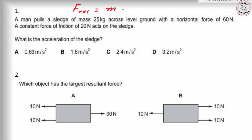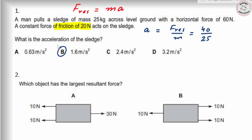In the first sample question, we need to find acceleration. The mass is provided, there is a horizontal force of 60 newtons, but 20 newtons is wasted as friction. The frictional force of 20 newtons acts opposite to the direction of motion. So acceleration equals resultant force divided by mass: (60 - 20) divided by 25 equals 40 over 25, which is 1.6 meters per second squared.